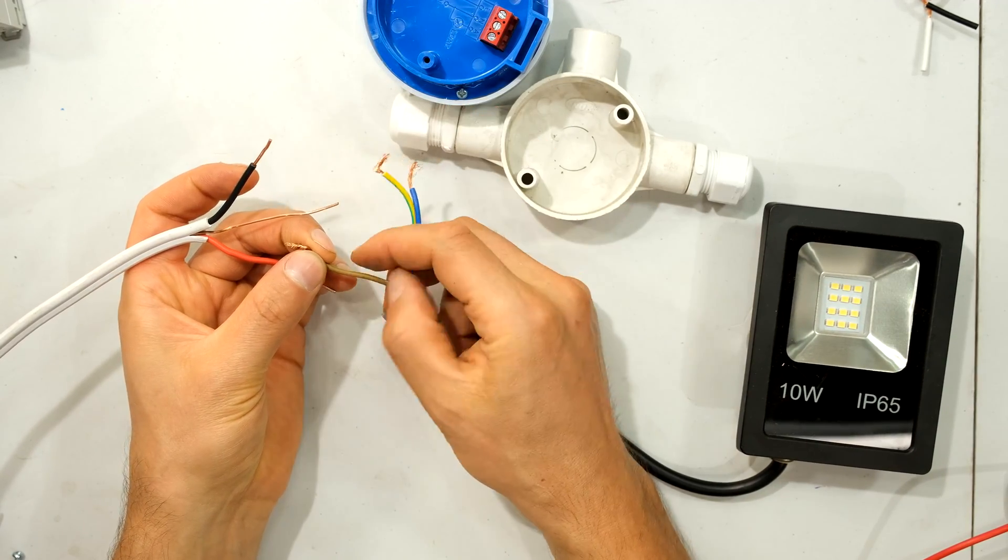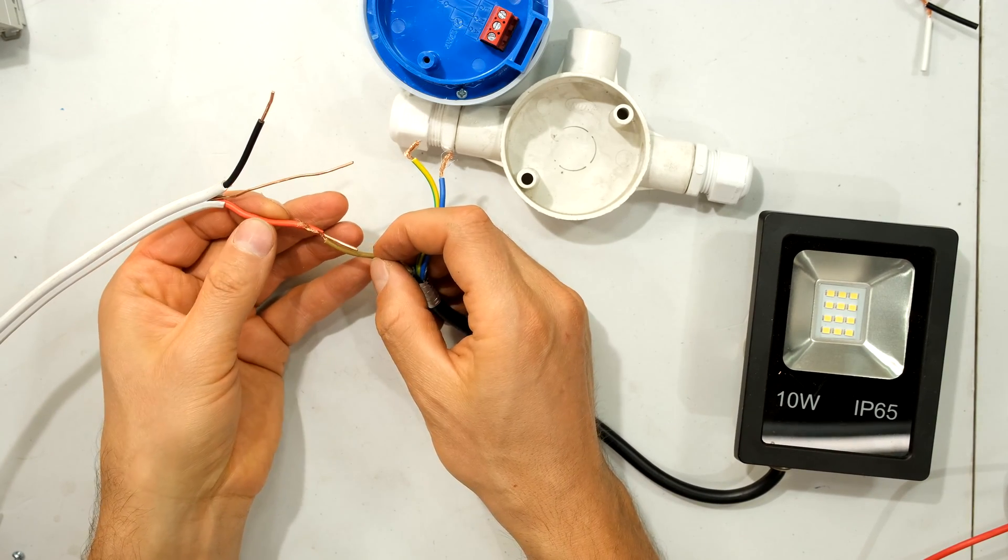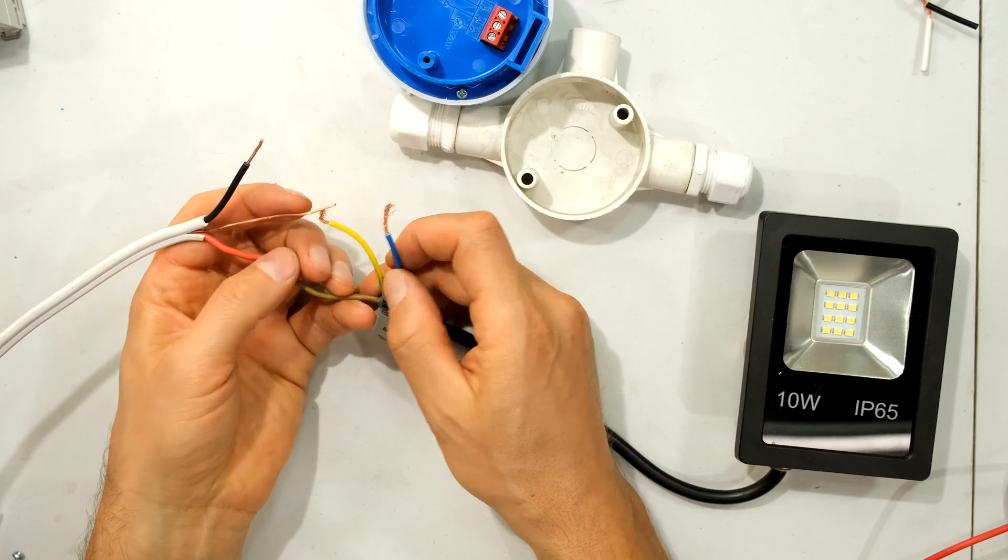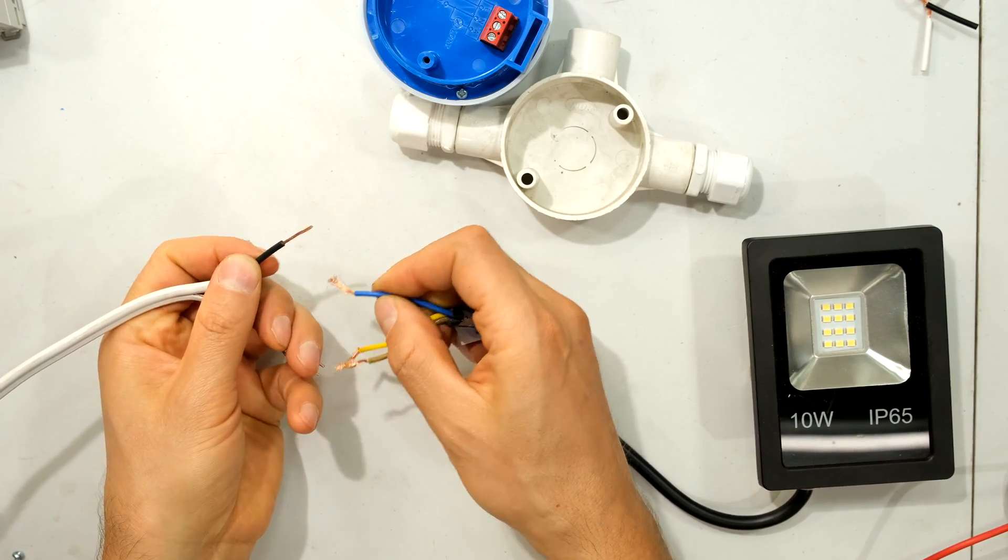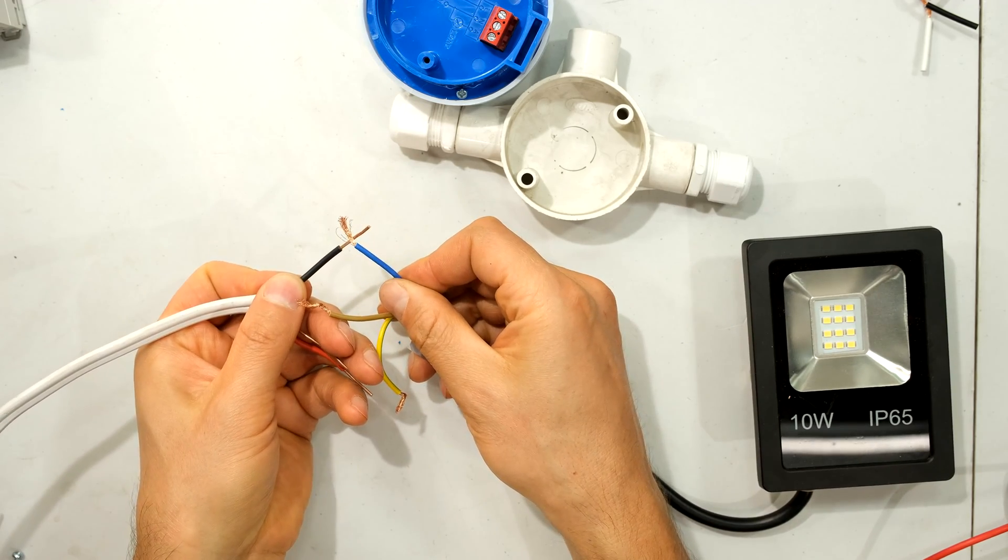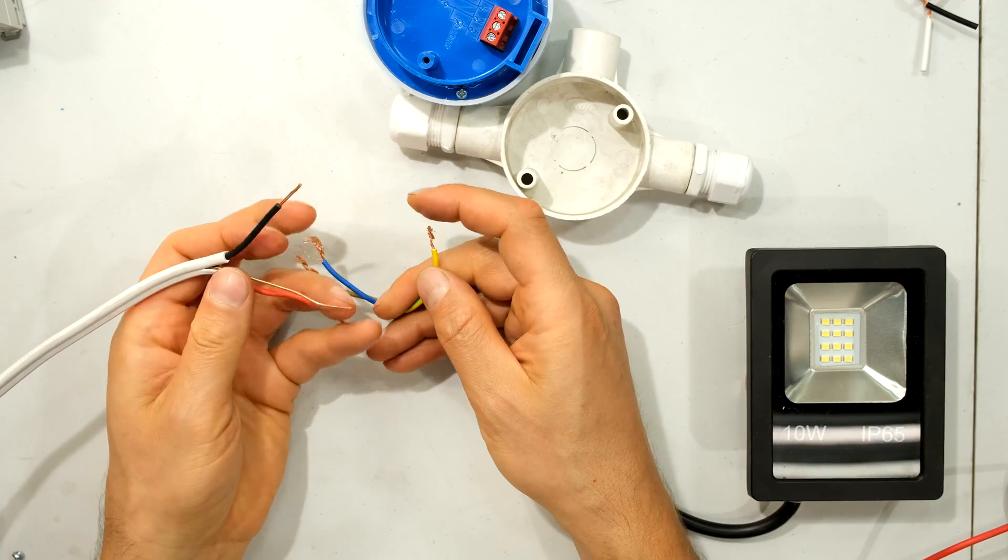Right. Now on my luminaire, I have brown, which is the live. So in this video, brown or red is considered live. The blue in this case is the neutral. So in this video, the blue and the black are both neutral wires. Then I have another wire here. This is green and yellow. This is my earth.